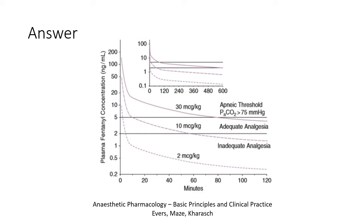You can see that a 30 microgram per kilogram bolus will result in apnoea for about one and a half hours, and effective analgesia for about 10 hours. I encourage you to call to mind what you might have been told about fentanyl — that its peak effect occurs early and it wears off quickly. The answer is yes and no. If offset occurs in the distribution phase, as it will for a 2 microgram per kilogram bolus, then it will be quick. However, if offset is going to occur during the terminal elimination phase, especially if the dose is very big, then that effect can be very long indeed.